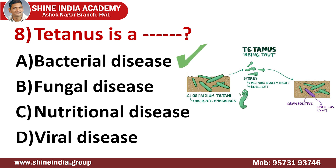Question number eight: tetanus is a bacterial disease. We have two types of tetanus toxins, also known as tetanospasmin and tetanolysin. These are the two toxins which can be released by the bacteria Clostridium tetani. Tetanolysin is a hemolysin with no known function or pathology. Clostridium tetani is the causative organism for tetanus. It is an exotoxin-producing pathology.